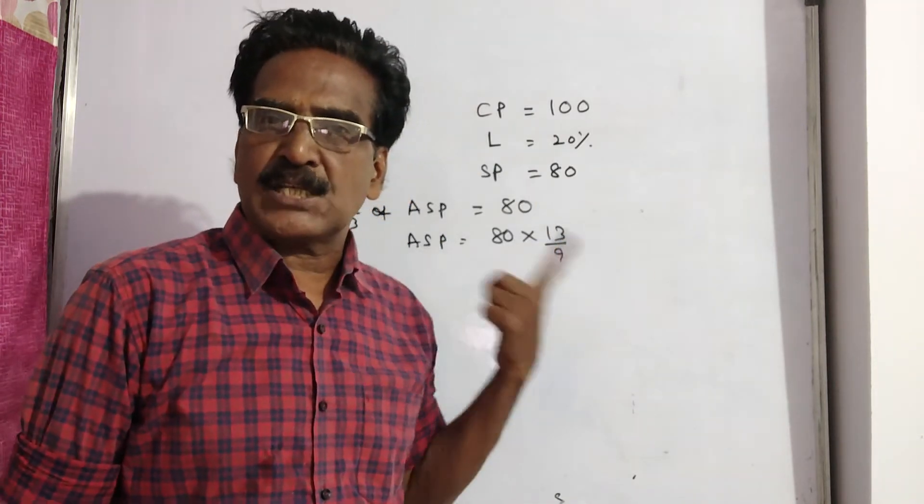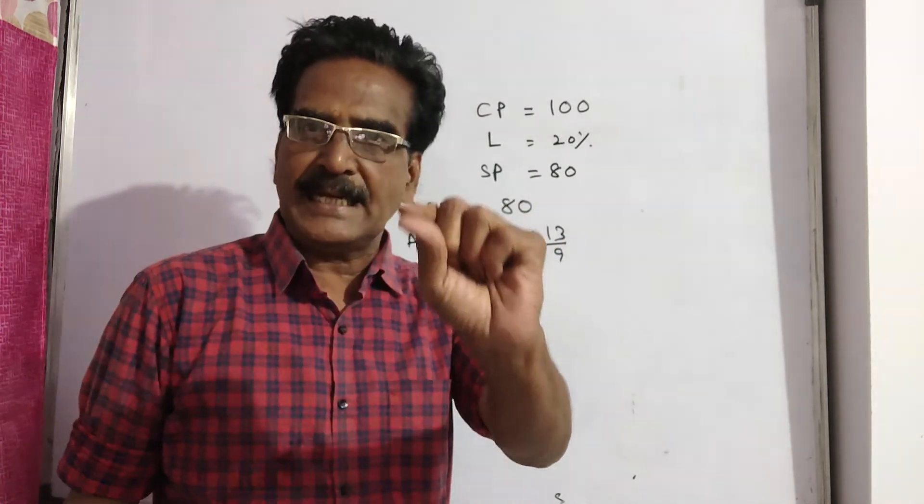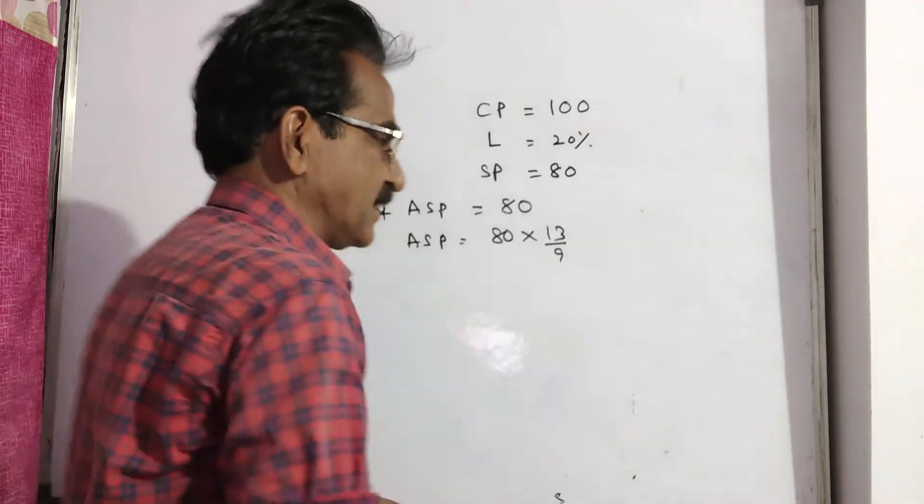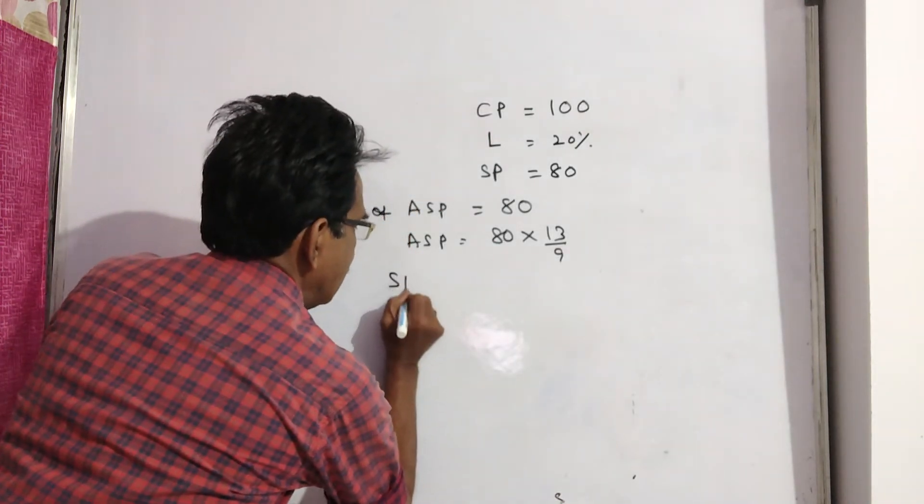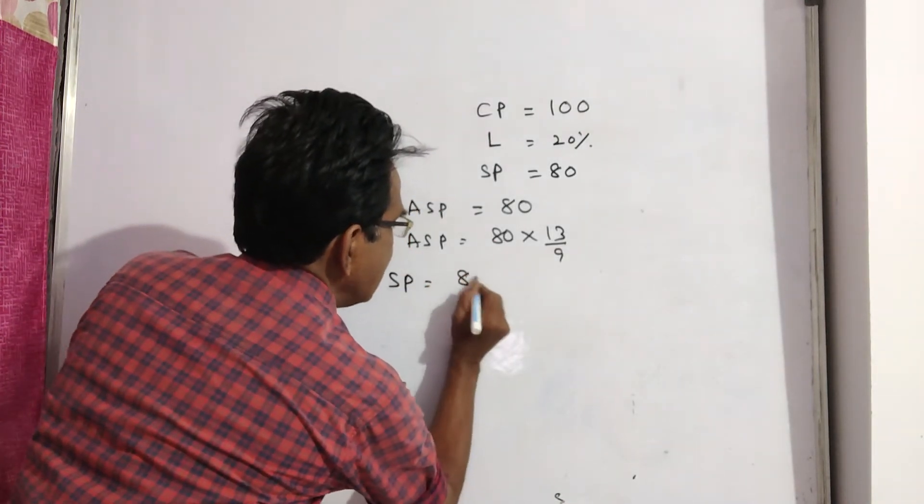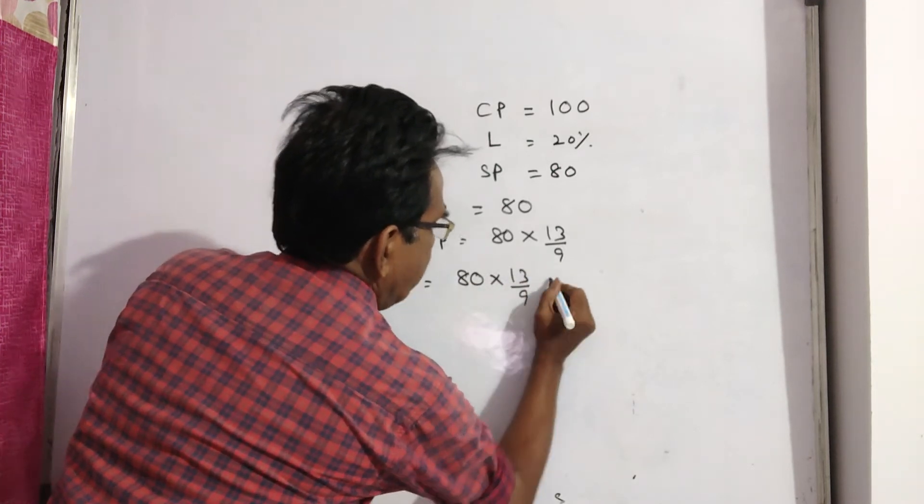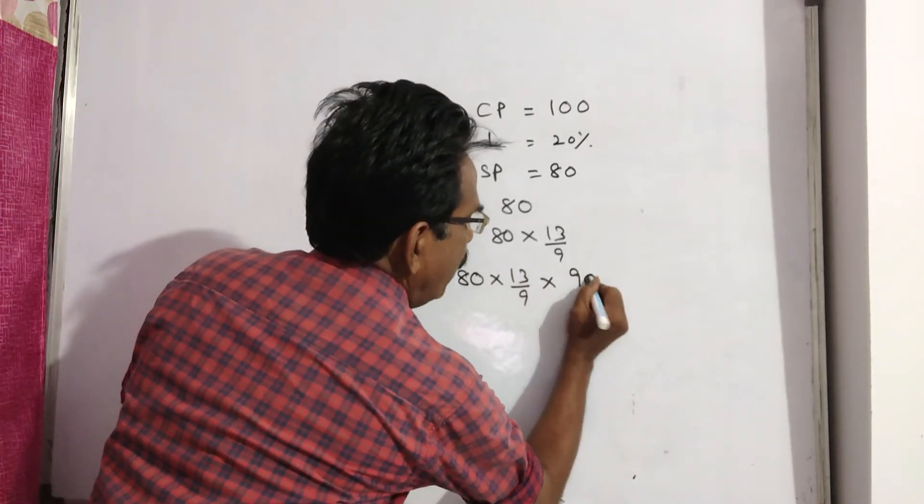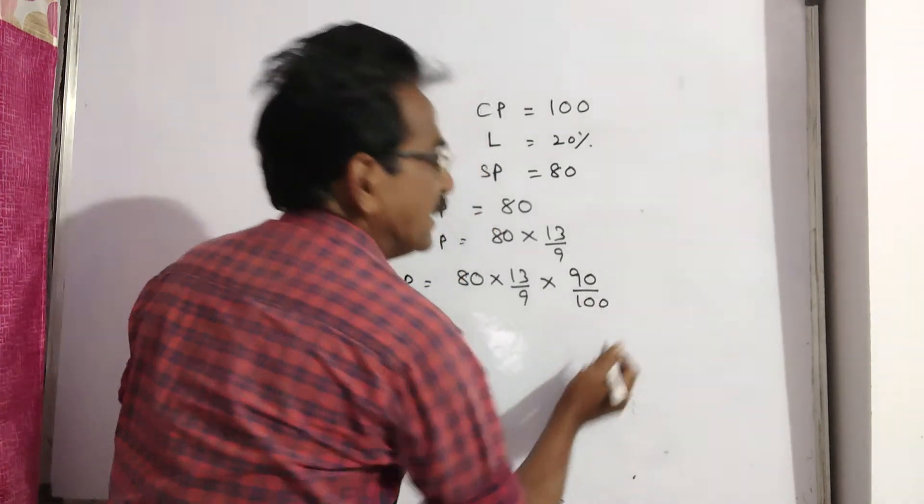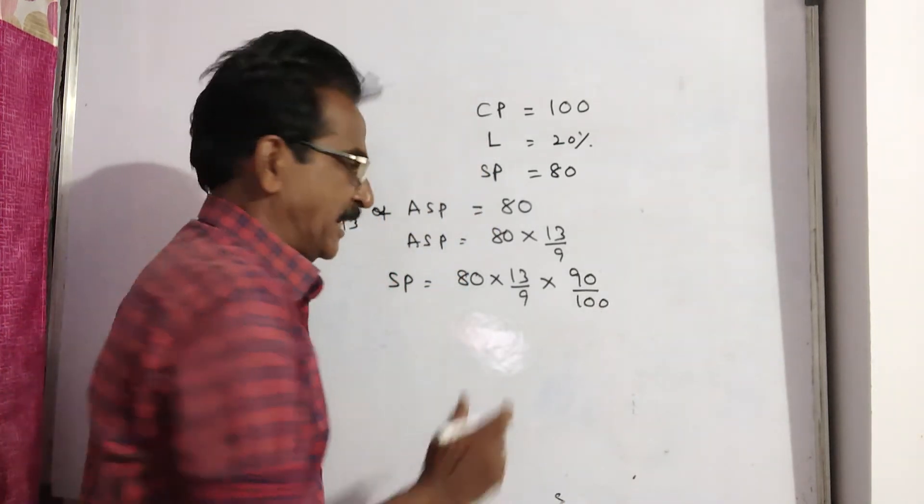Now the article is sold at 10% less than the actual selling price. That means the selling price of the article is 10% less, so it was sold at 90% of its actual selling price.